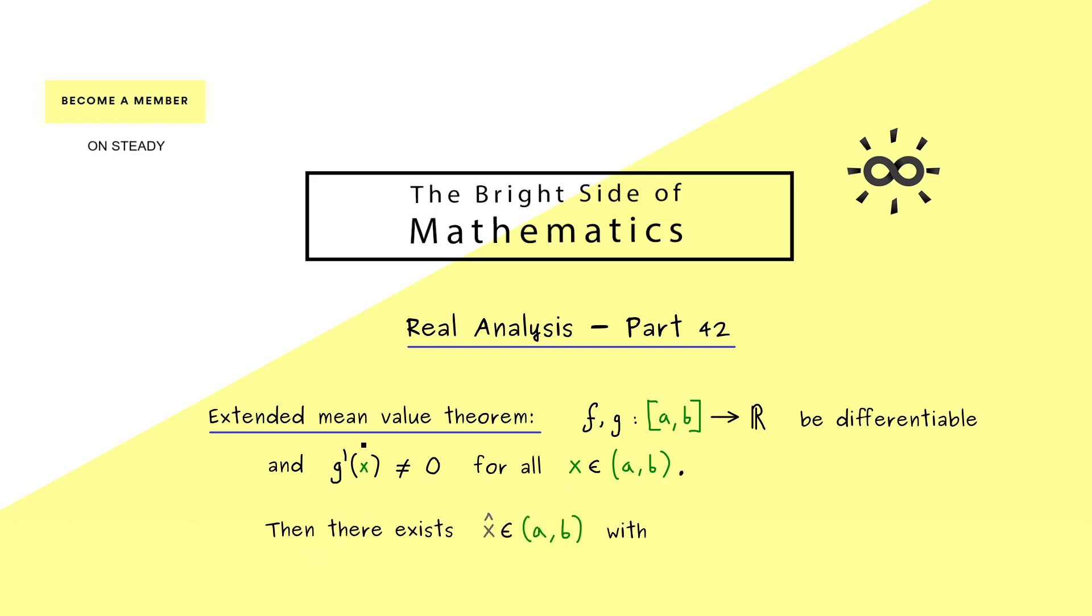And then as in a normal mean value theorem we get an inner point x̂ where we find the mean slope. However here this mean slope is not a normal slope but rather a combination of the two functions f and g. So the difference in the denominator is now measured with the function g. Moreover this is also not just f'(x̂) but rather f'(x̂) divided by g'(x̂). So you see this is also an expression that combines the two functions f and g now with the derivatives.